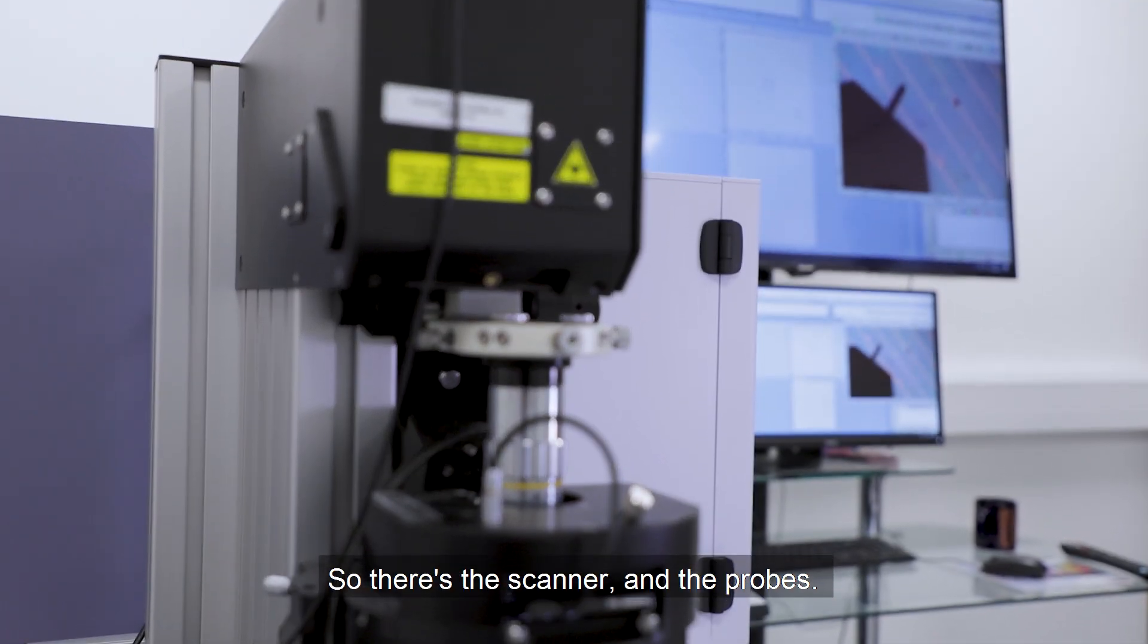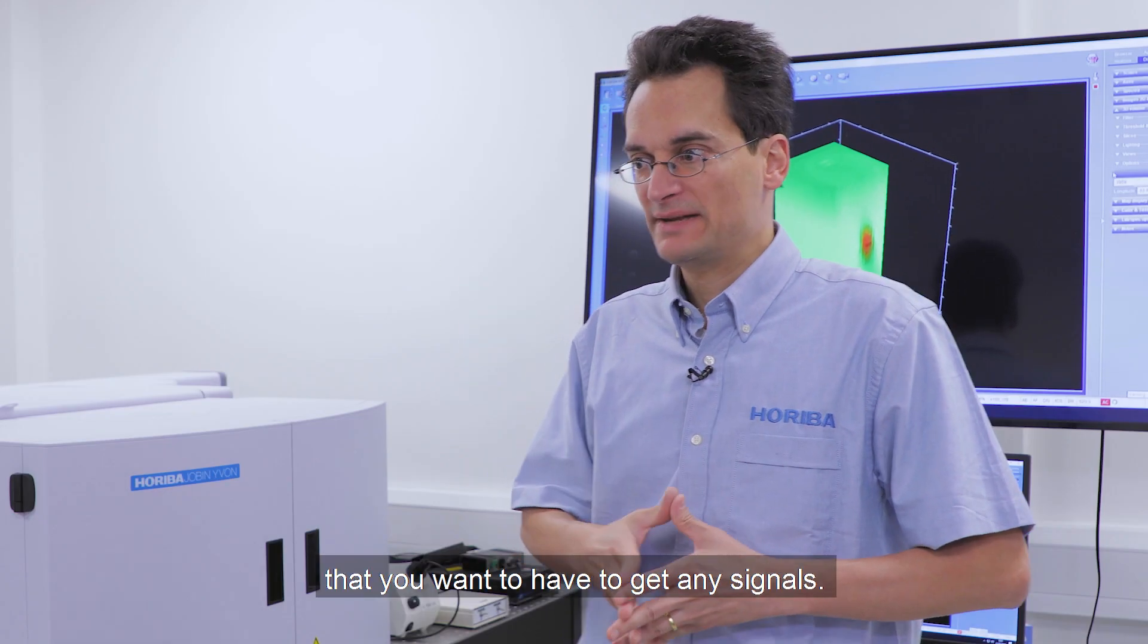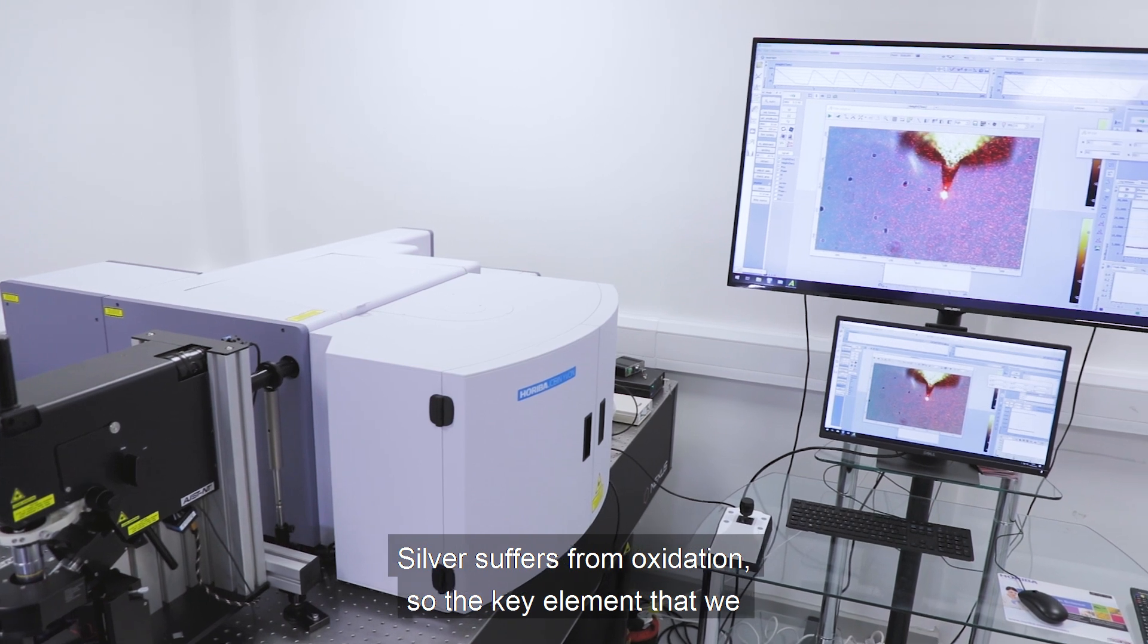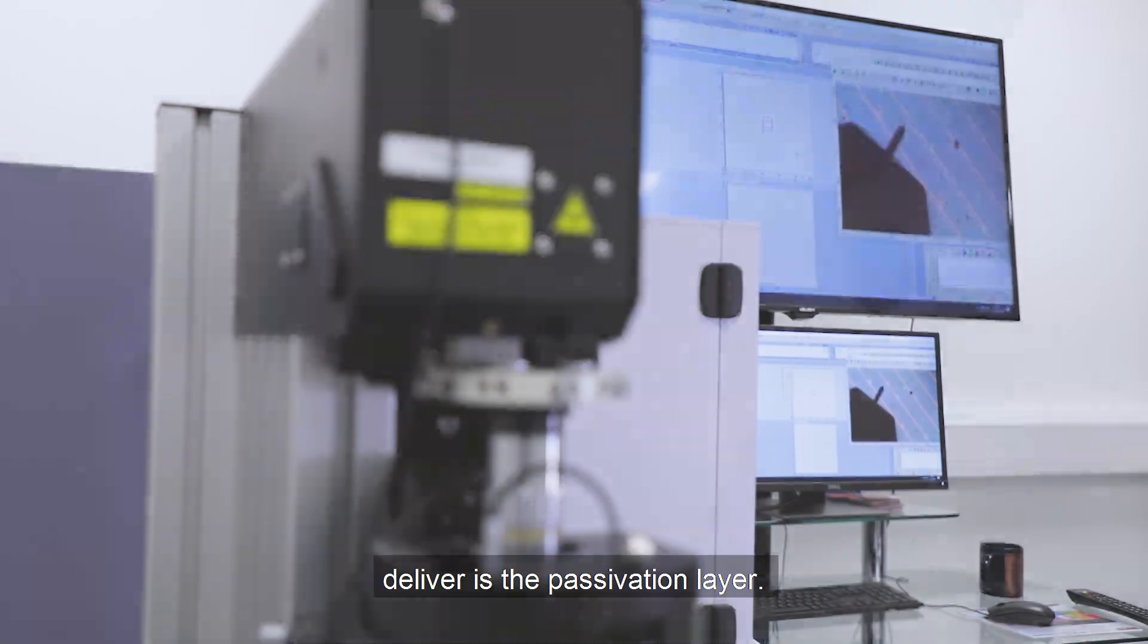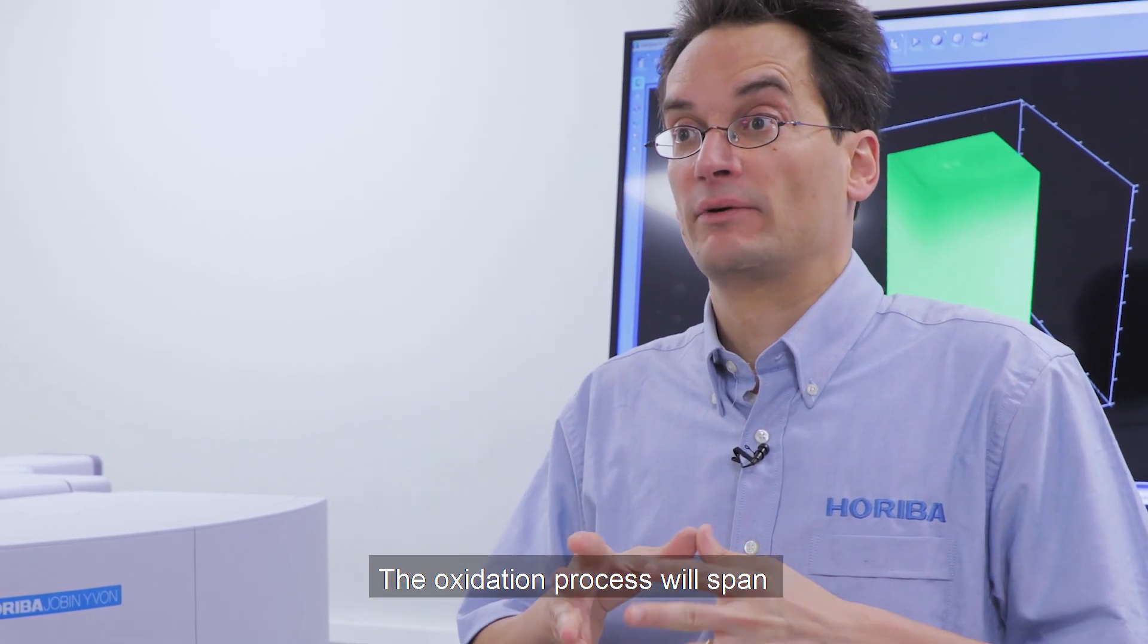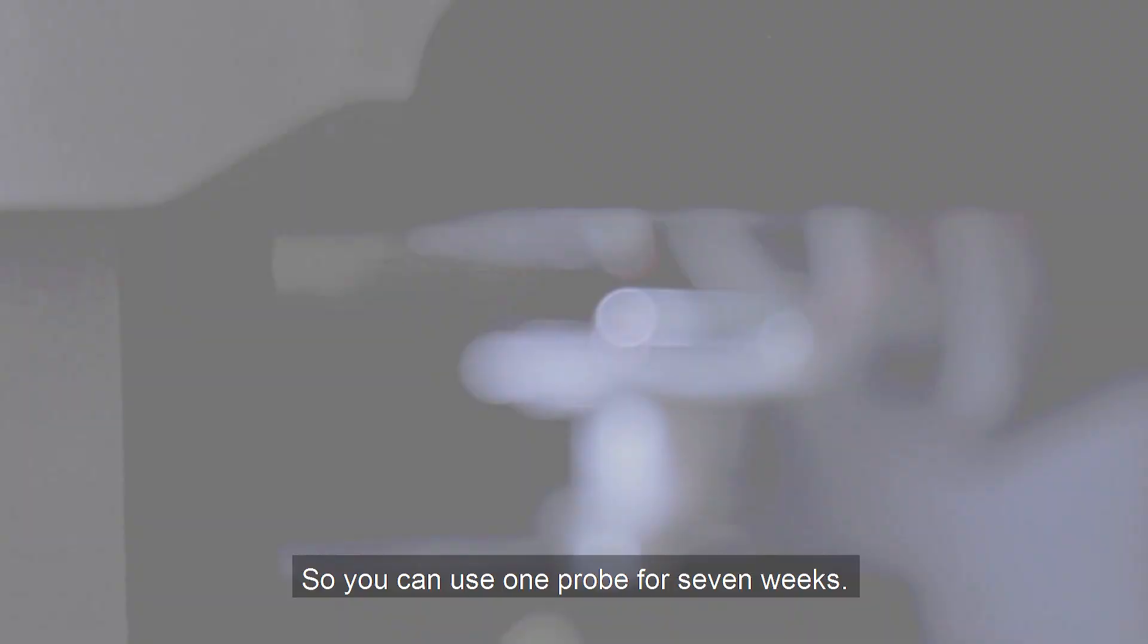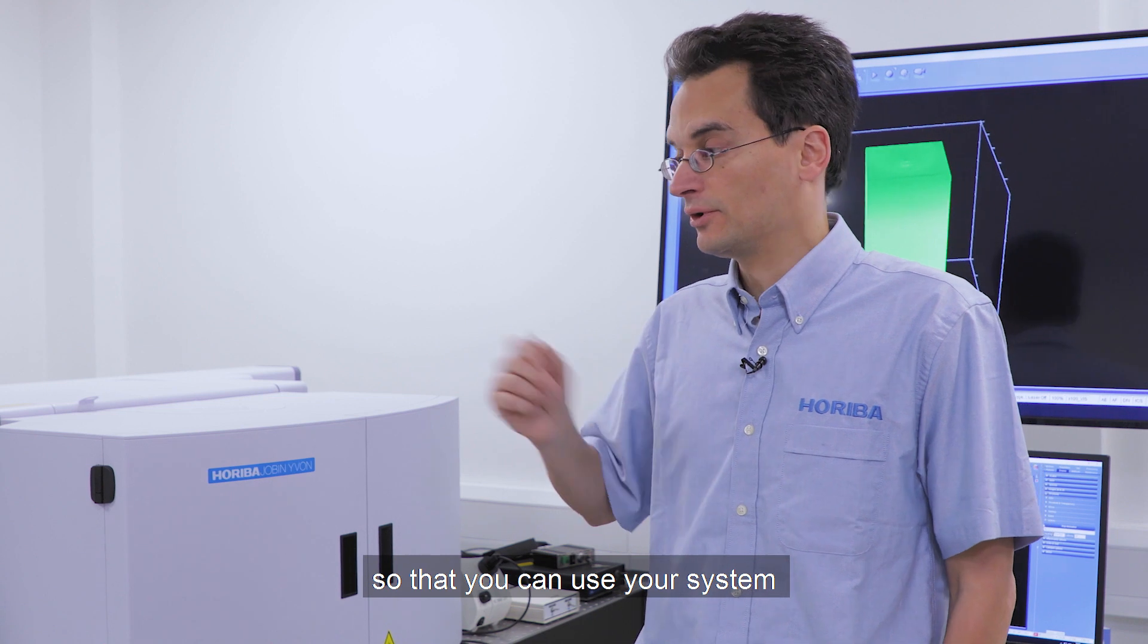There's a scanner and probes. There are two types of probes: gold and silver. Silver suffers from oxidation, so the key element that addresses this problem is a passivation layer on top of it. This avoids oxidation—the oxidation process will span over a period of about seven weeks, so you can use one probe for seven weeks. The spring constant of a probe is designed so you can use your system